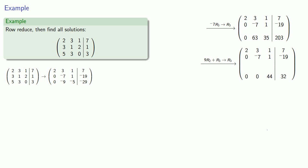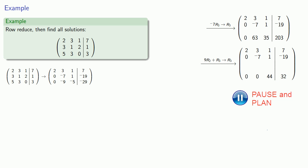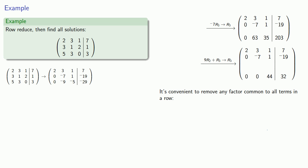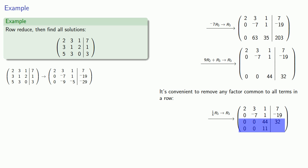Now you'll notice one of the disadvantages here is that the numbers in our matrix grow larger and larger. And this is the price we have to pay for avoiding fractions. However, every now and then we find a row where all entries are divisible by the same number. And so it's convenient to remove any factor common to all terms in a row, because this will help prevent our numbers from getting too large. So here we'll multiply that third row by one fourth to get 0, 0, 11, 8 as our new third row.